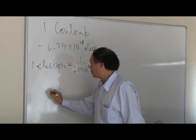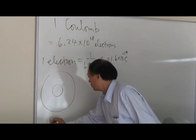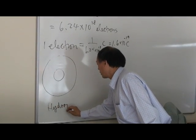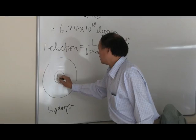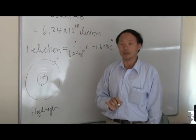Now electron actually is, say for the hydrogen atom, in the center is the proton and the electron orbits around the proton.